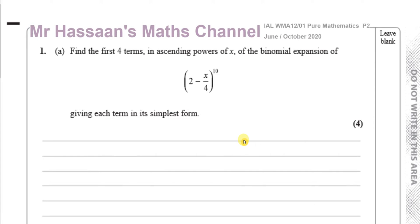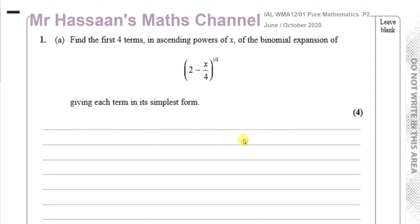Find the first four terms in ascending powers of x of the binomial expansion of (2 - x/4) to the power of 10, giving each term in its simplest form. When dealing with P2 binomial expansion, by far the easiest way is to use the NCR button on a calculator to find the main coefficients that we need.